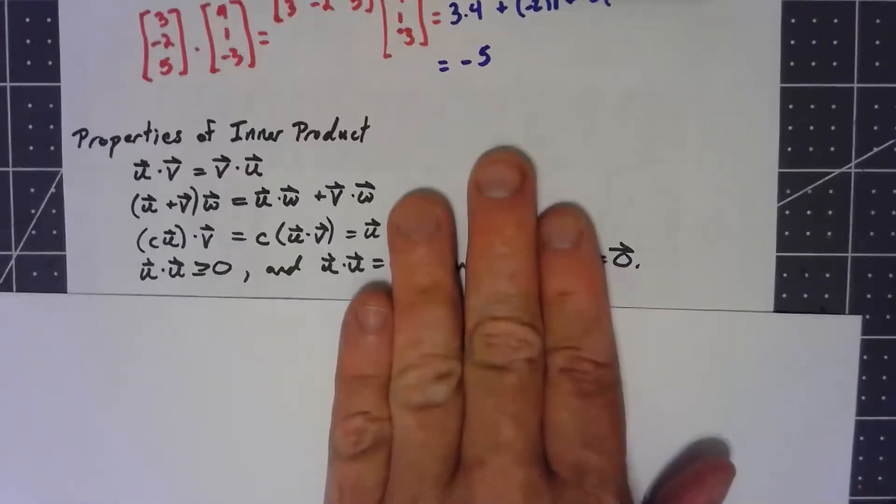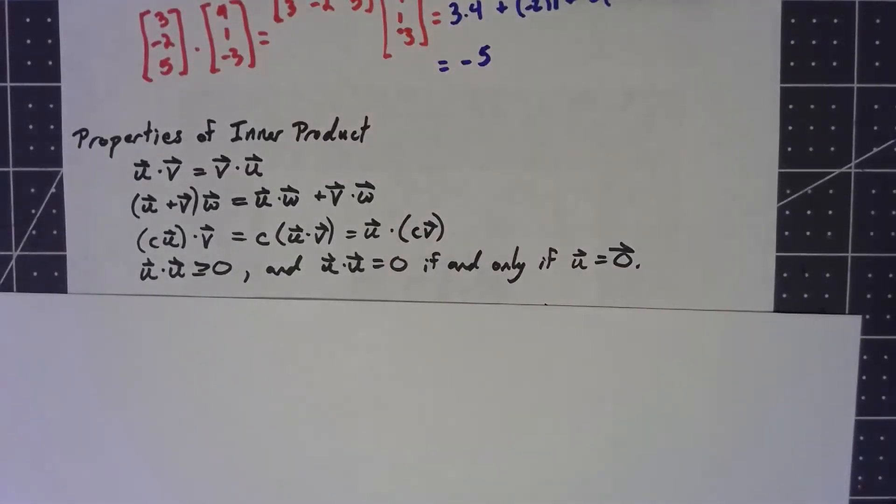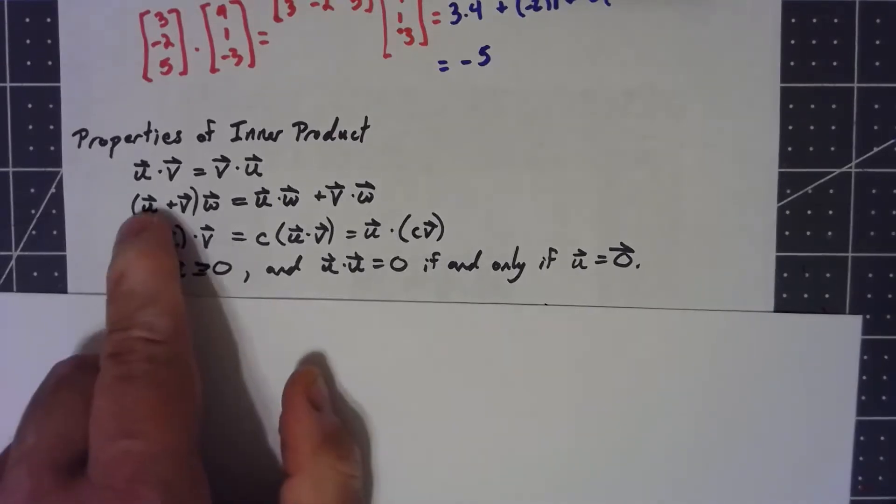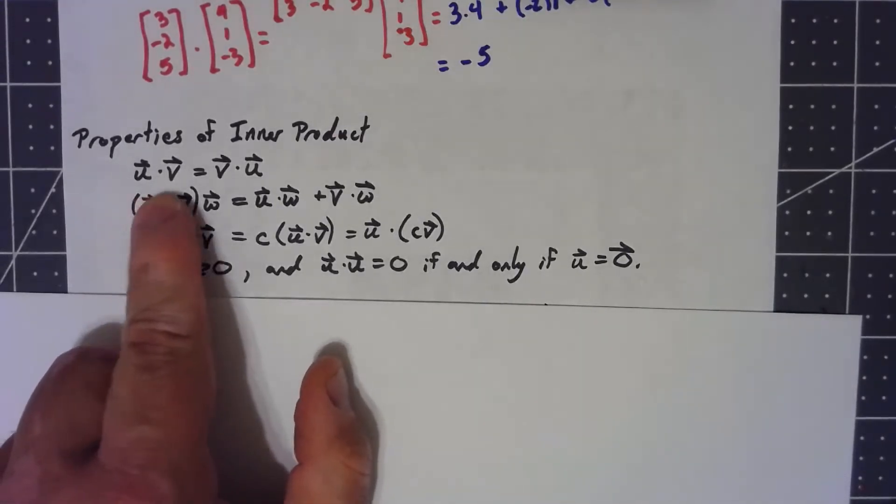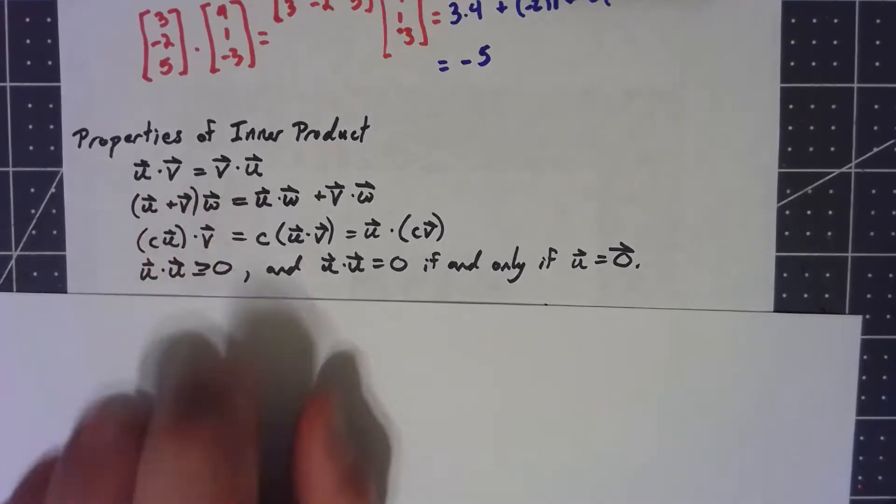Now there's certain properties of an inner product. First of all, it has to be commutative. u dot v has to be v dot u.